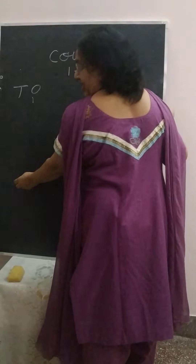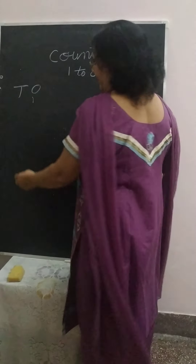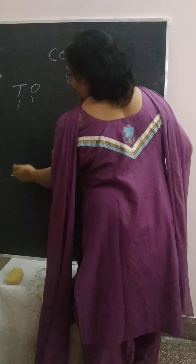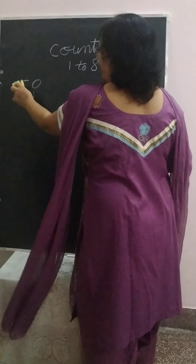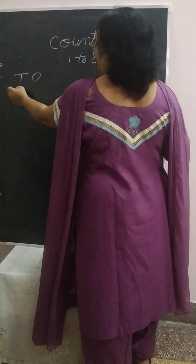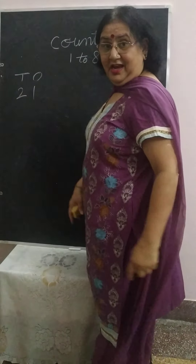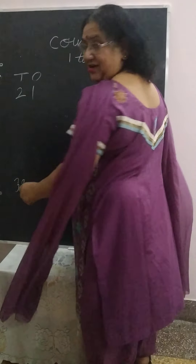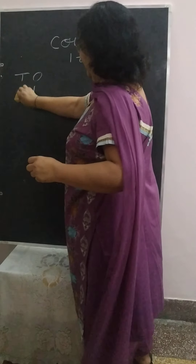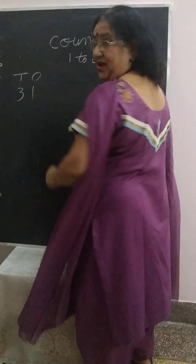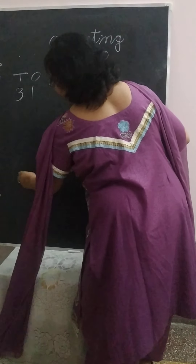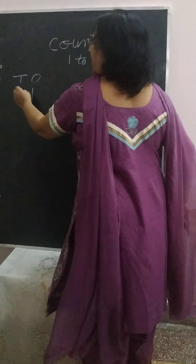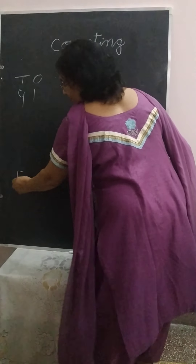In the 1's line, last will come 10. In the 11's line, last will come 20. And what about 21's line? Last will come 30. 31's line, last will come 40. 41's line, last will come 50.